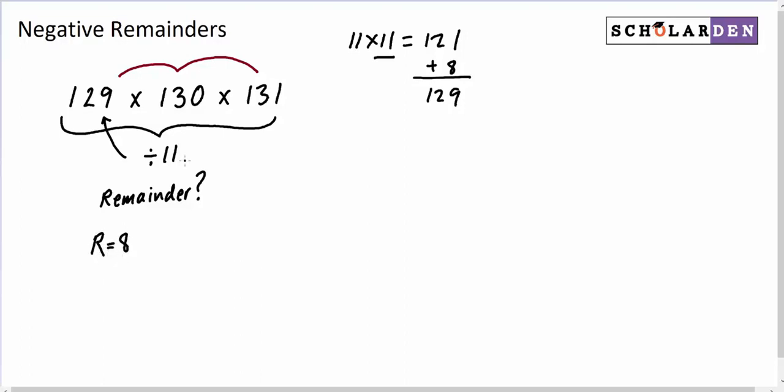That means the remainder when 11 goes into 130 is going to be 9. And when it goes into 131, the remainder is going to be 10.